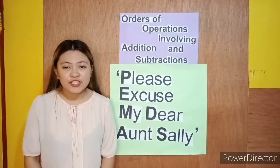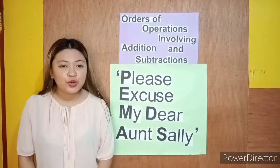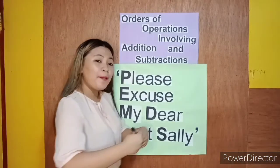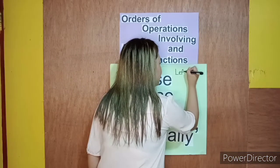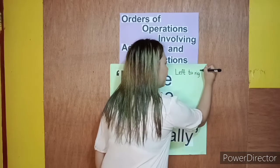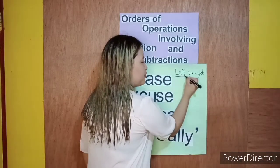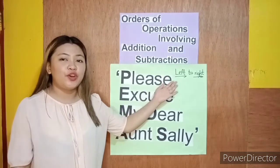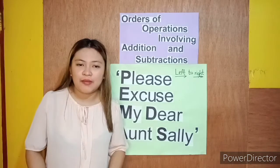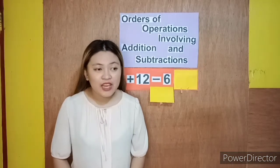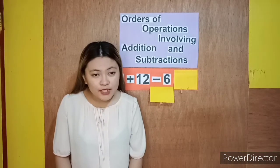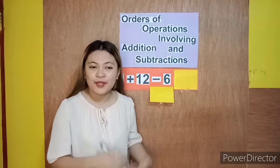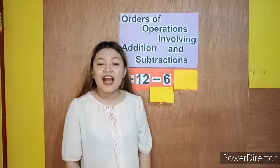In answering order of operations involving addition and subtraction, we need to answer which comes first. Our order or sequence of operations is from left to right. We need to follow from left to right. So if we have equations, we need to follow first the equation on the left, then to the right. Remember that whether it is addition or subtraction, what comes first on the left to right, we will solve it first.